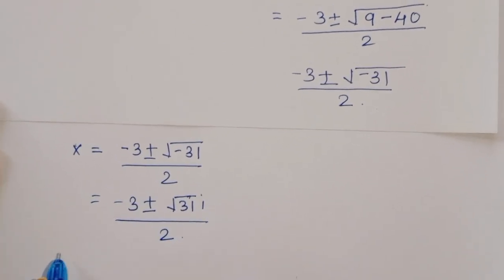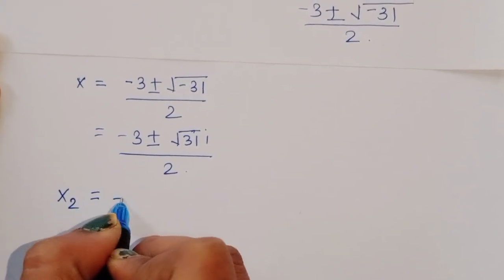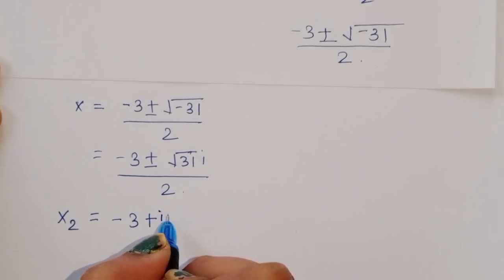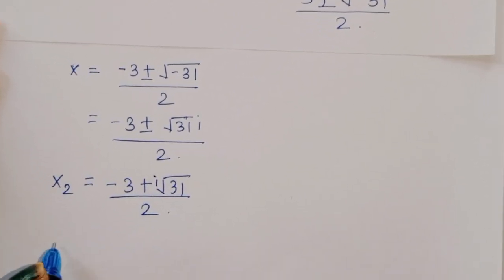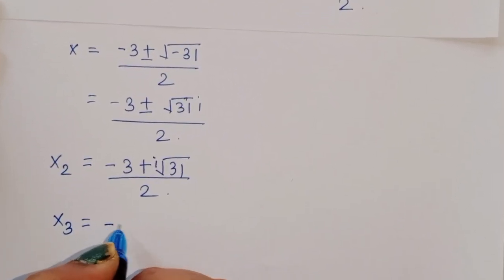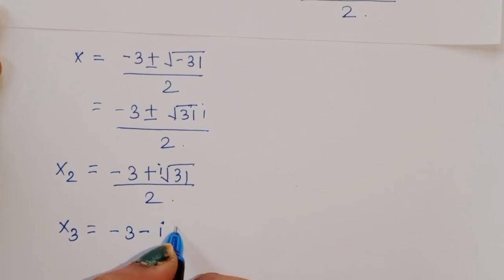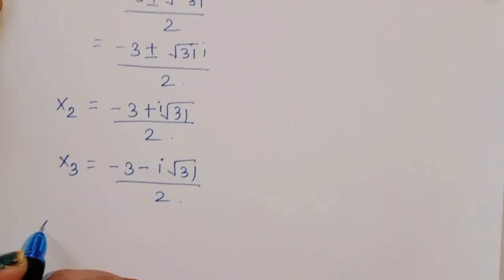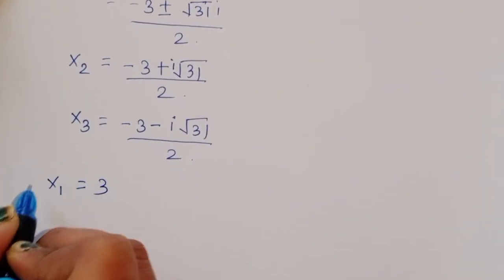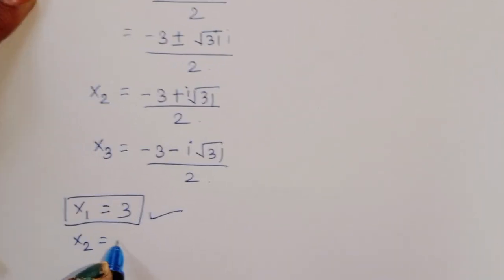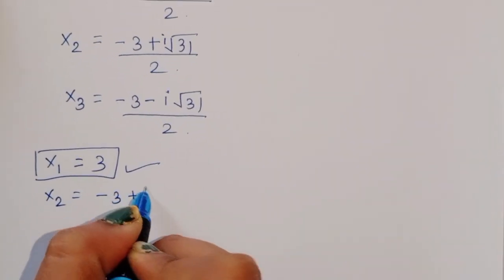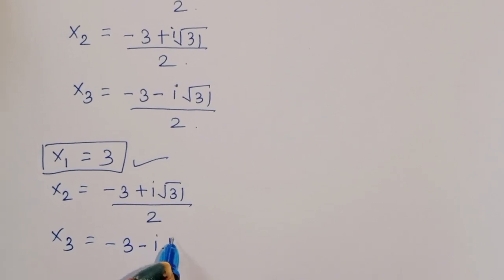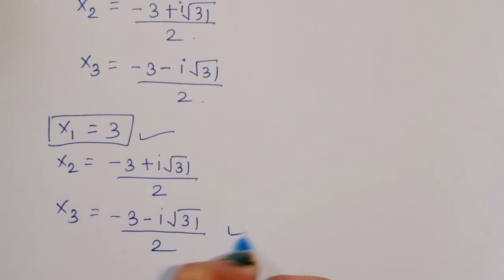So we have three solutions in total. x₁ = 3. x₂ = (−3 + i√31) / 2, and x₃ = (−3 − i√31) / 2. Thank you.